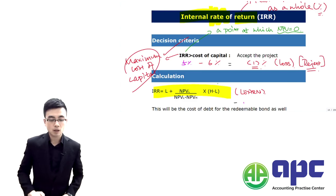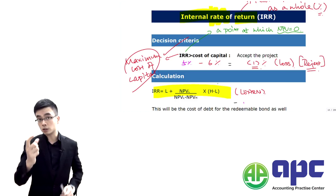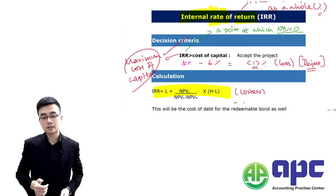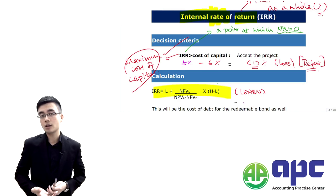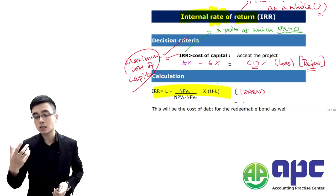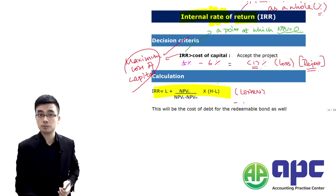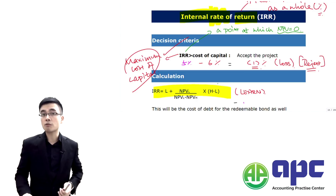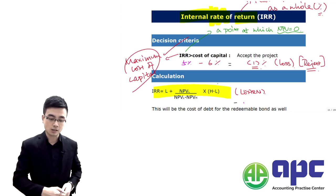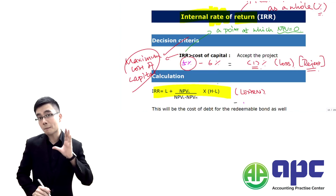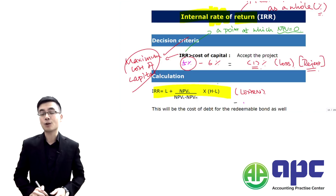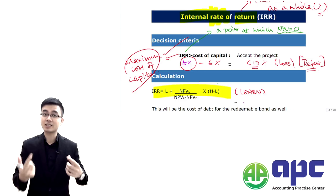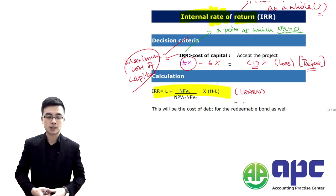If the IRR is 5%, that means we determine the maximum cost we're going to pay — for example, to the bank if we take a bank loan. The maximum cost is 5%, not 6%, because exceeding that maximum cost will certainly end up with a loss-making position. Exceeding 5% means you end up with a loss.